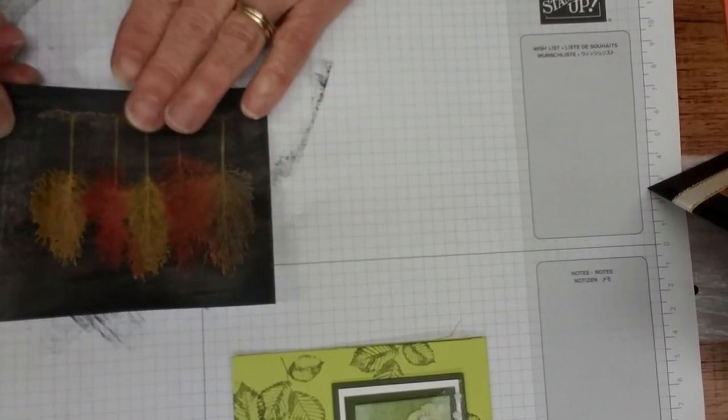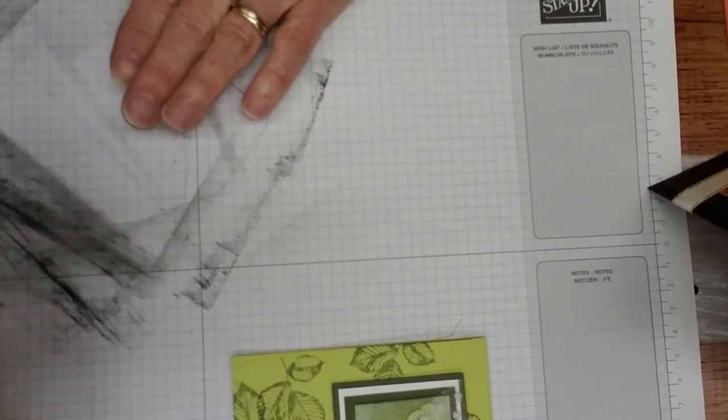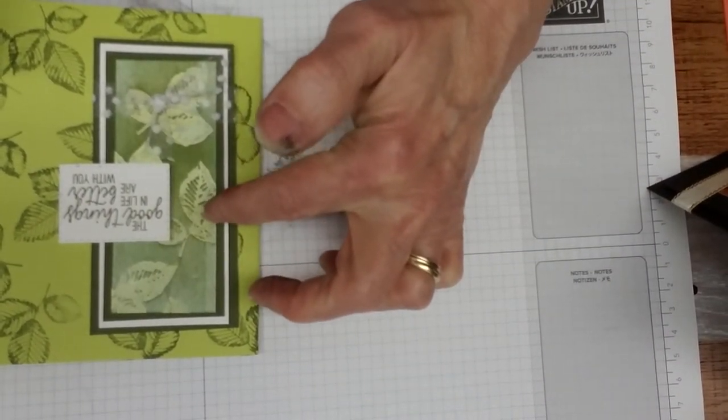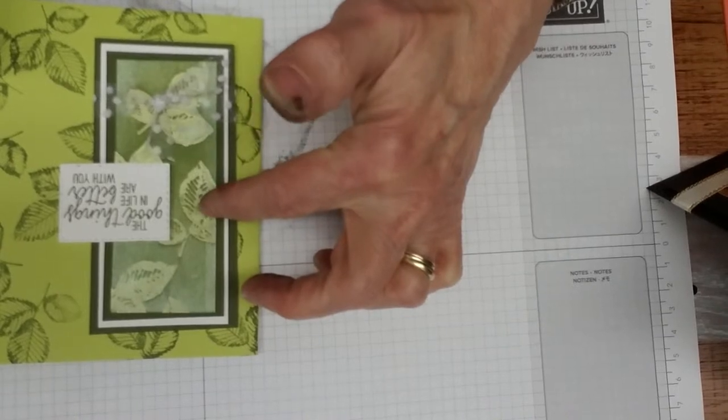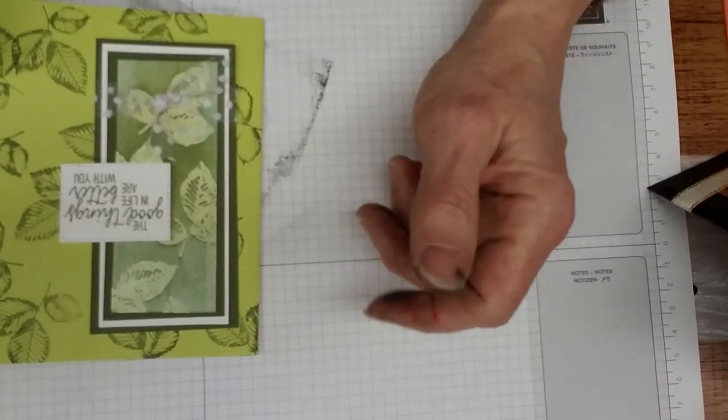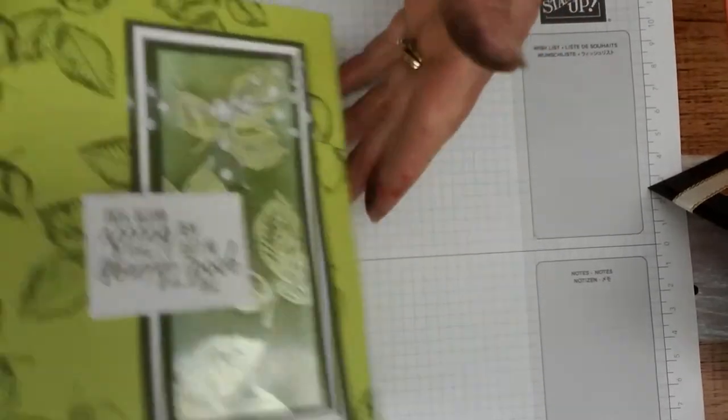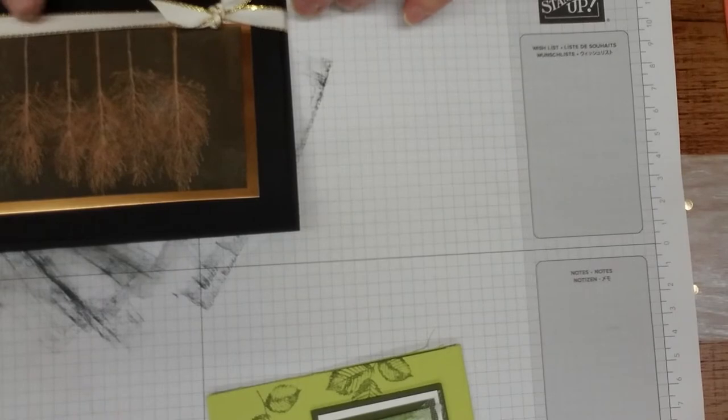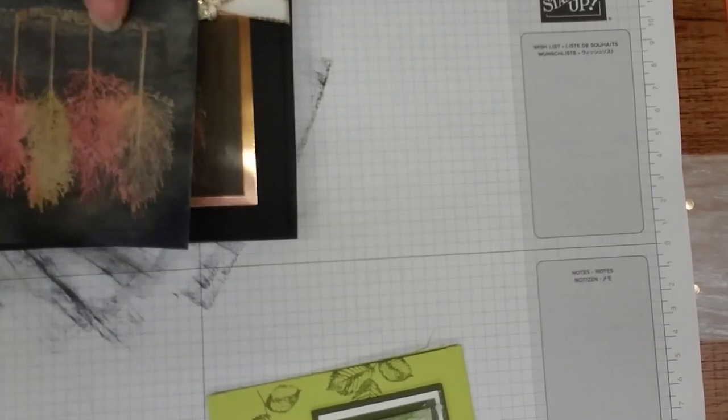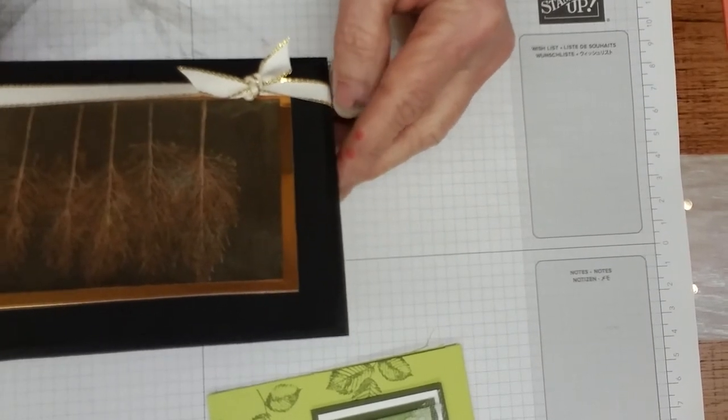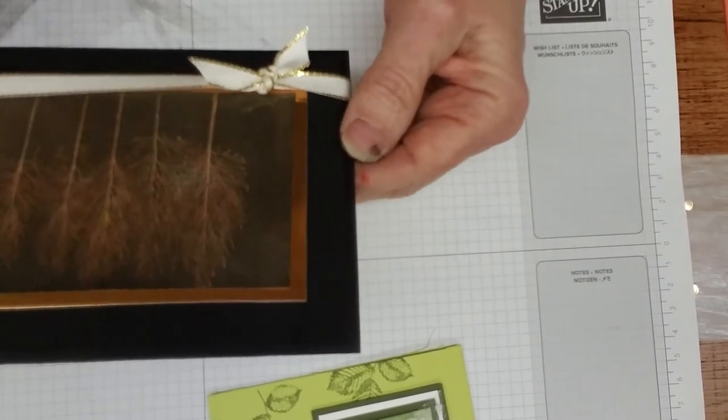I went ahead and finished a couple of these up. That's the same technique that I did with these leaves, only when I did this I used Pear Pizzazz with the frost white shimmer, and then I went over it with mossy meadow for the darker green to make that pop. This is the one that I forgot to add the dirt to the base of the trees, so I had to cover it up with our edged ribbon.